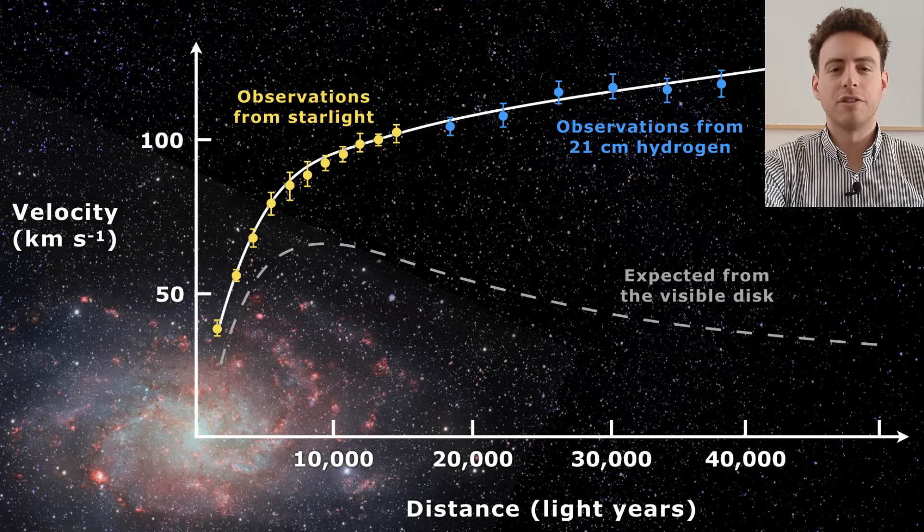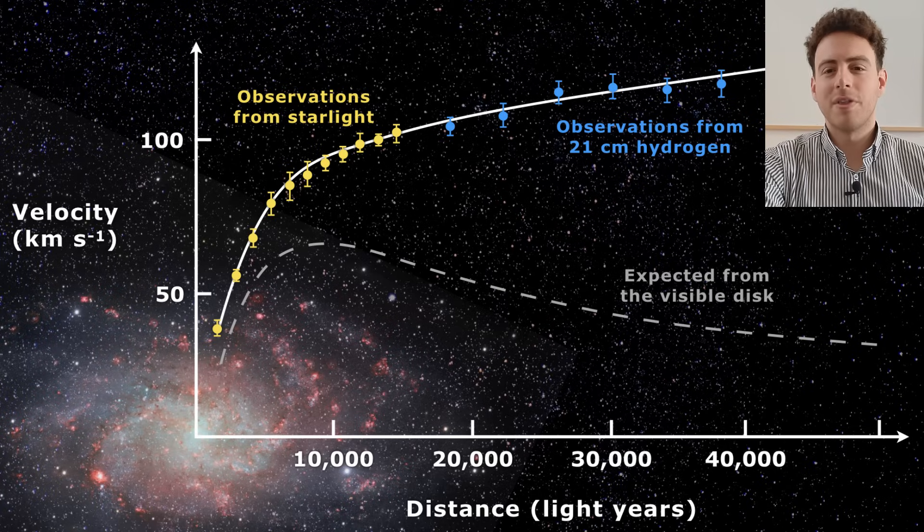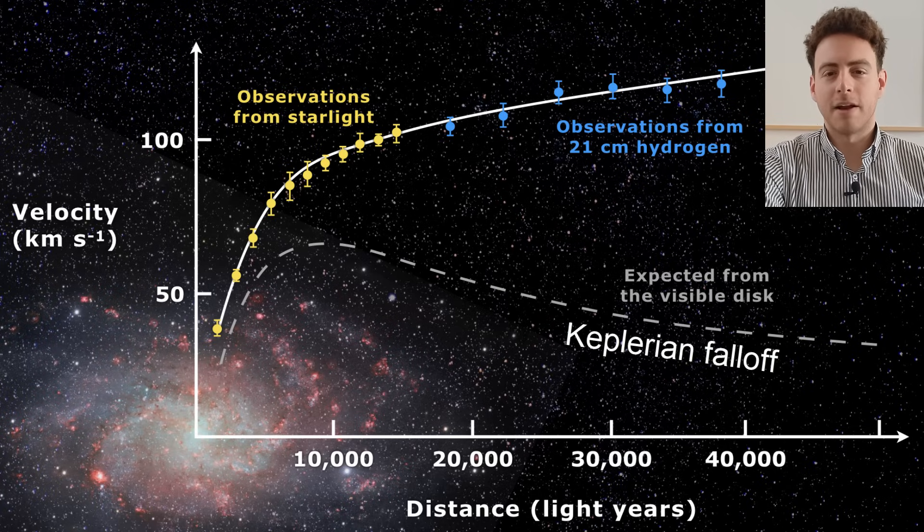We measure the velocities of stars and gas in galaxies around their center, and generally the rotation curves are flat instead of following the expected decay of velocities at large radii, the so-called Keplerian falloff.